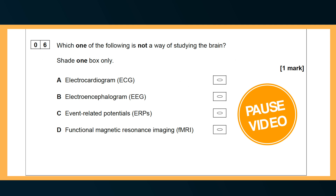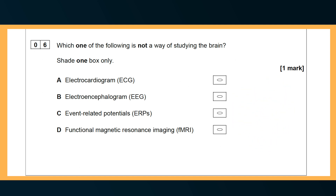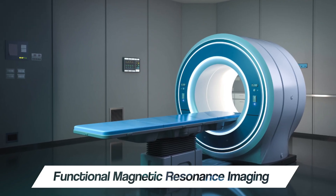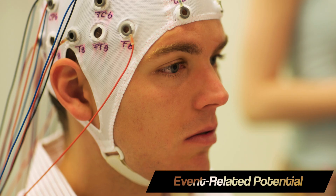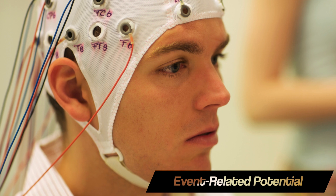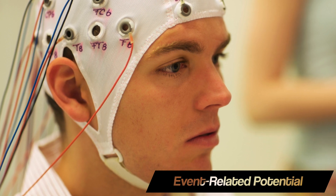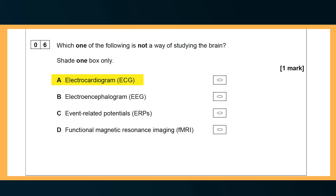Question 6 is another multiple choice question which says: which one of the following is not a way of studying the brain? Shade one box only. One mark. Be mindful that this is a multiple choice question that says not — be careful not to miss this. This question is testing your understanding of ways of studying the brain, and there are four of them named on the specification. FMRIs study blood flow in the brain whilst performing a task. EEGs measure the electrical activity in the brain, and ERPs study the electrical activity in the brain in response to a specific stimulus, which leaves ECGs. The word cardio relates to the heart and not the brain, so A is the correct answer.